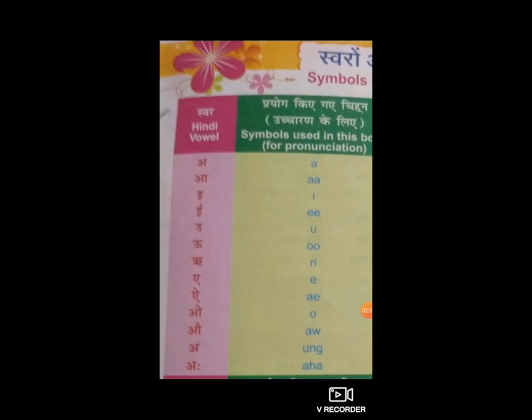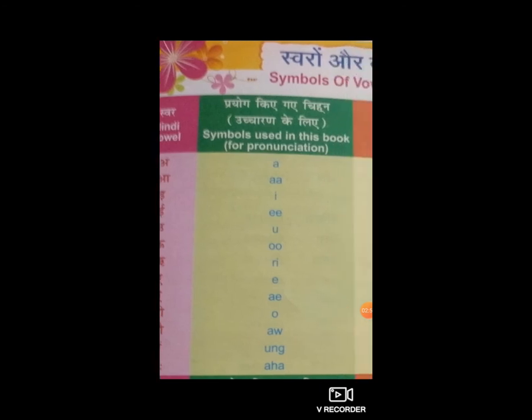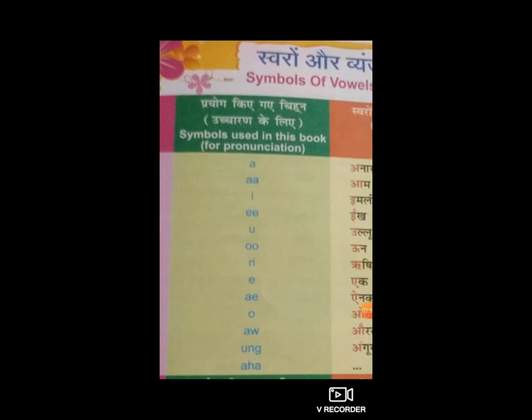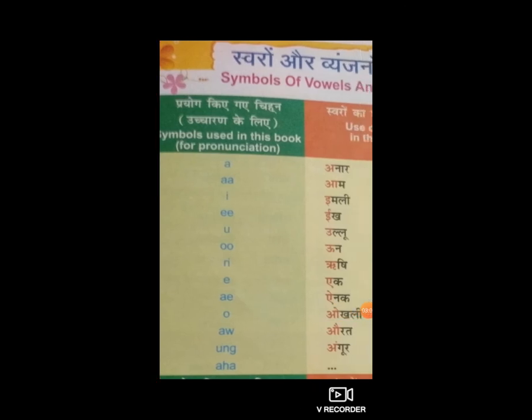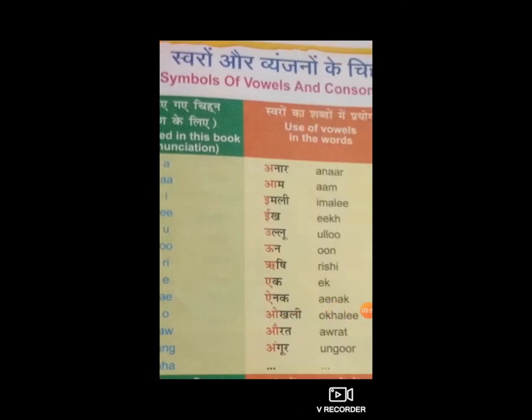अब आएगा 'औ'। औ का उच्चारण होगा AW। औ से बनेगा औरत: A, W, R, A, T। औरत। Again repeat: A, W, R, A, T - औरत।